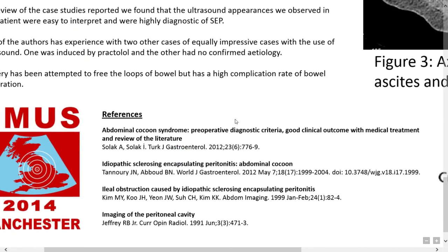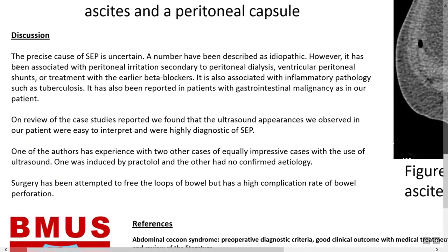In conclusion and discussion, the precise cause of sclerosing encapsulating peritonitis is uncertain. A number have been described as idiopathic; however, it has been associated with peritoneal irritation secondary to peritoneal dialysis, ventricular peritoneal shunts, or treatment with an earlier beta blocker.